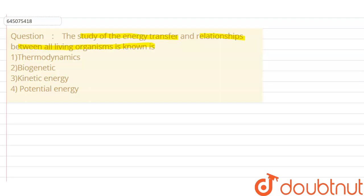Option 1 says thermodynamics, option 2 says biogenetic, option 3 says kinetic energy and option 4 says potential energy.